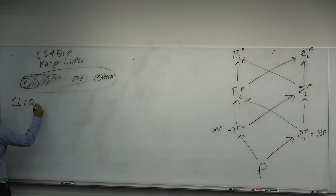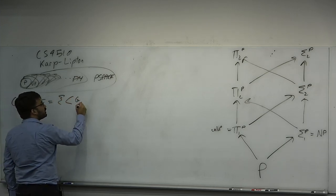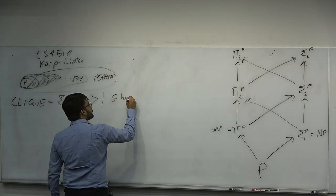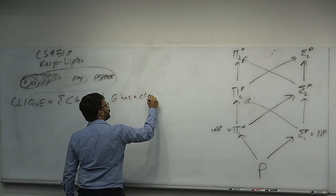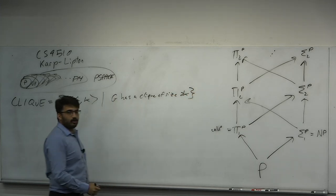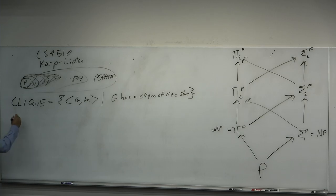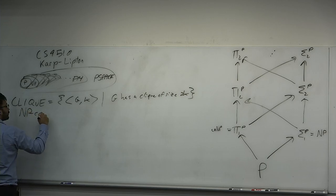Clique — we all remember what clique is. It's this problem: you're given G and K such that G has a clique of size greater than or equal to K. Why is clique in NP? Non-deterministically guess the clique, and then check if it's a clique. The witness is the clique — just check if it is a clique and it's of size greater than K. Clique is also NP-complete; you can prove the reduction from SAT.